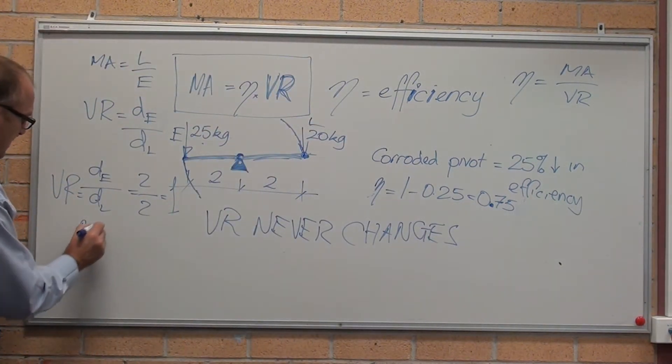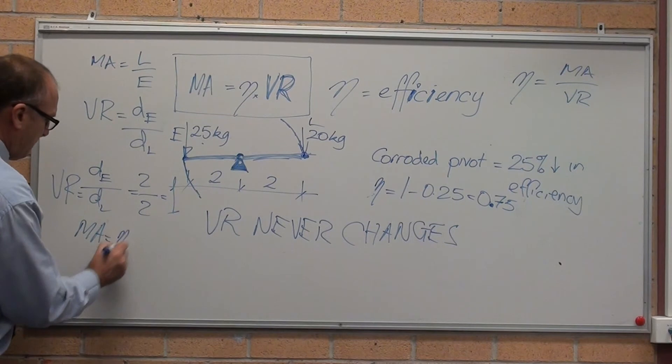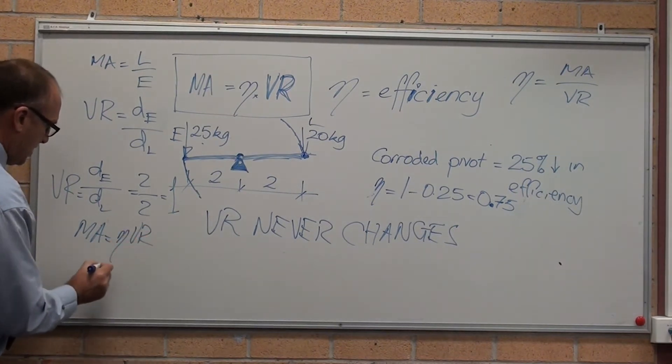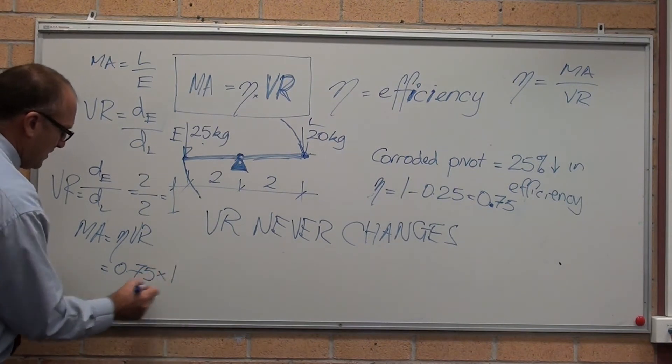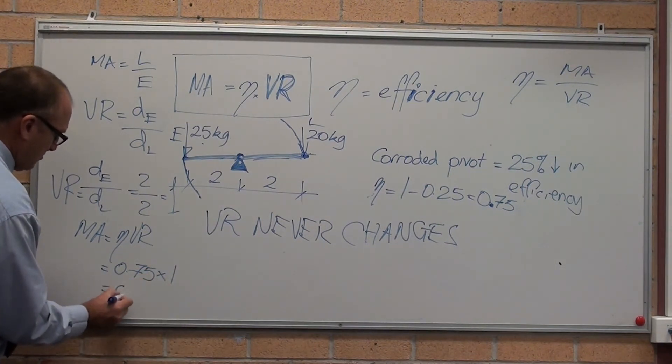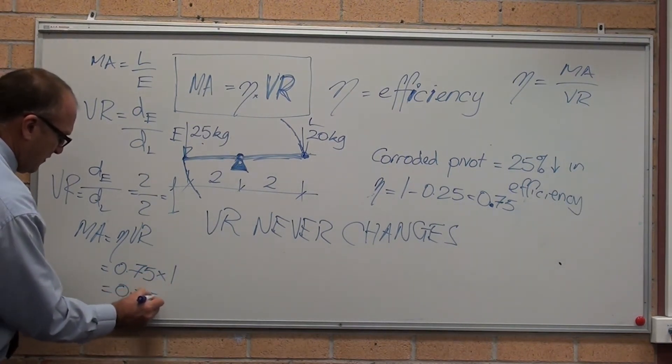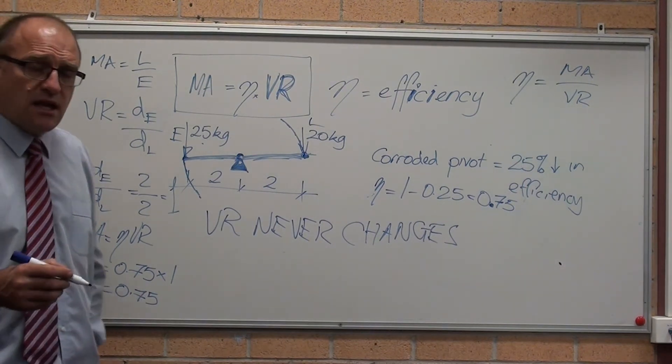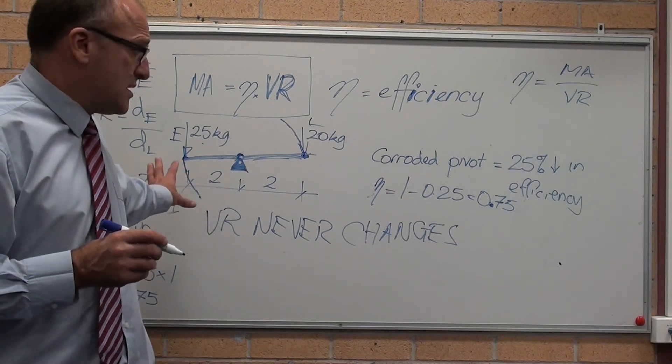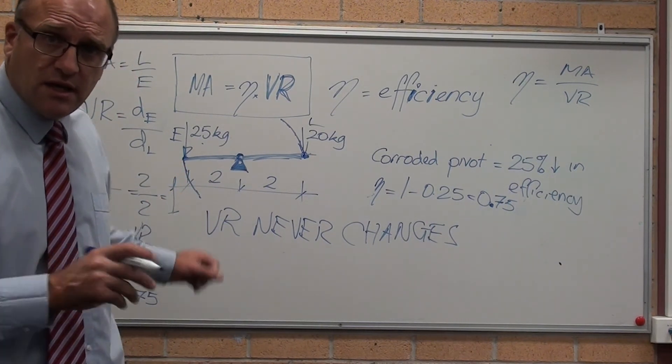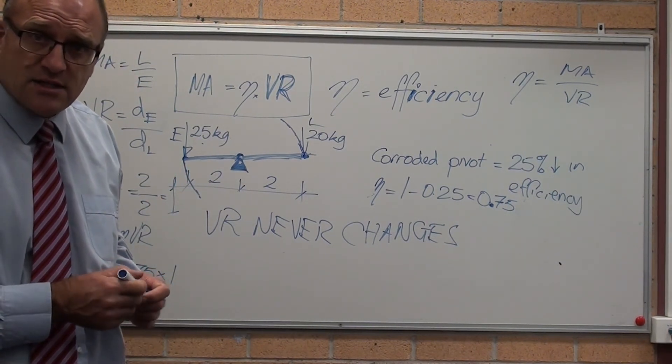Mechanical advantage equals efficiency times velocity ratio equals 0.75 times 1 equals, oddly enough, it's 0.75. So the correct answer in the HSC was B. That's the worked example of question 13 in 2019 HSC.